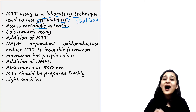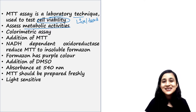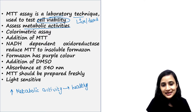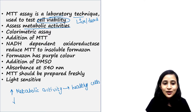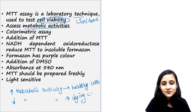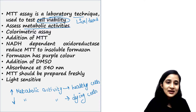If cells show a high amount of metabolic activity, it reflects that cells are healthy. So high metabolic activity means healthy cells, and low metabolic activity means cells are dying. MTT is a colorimetric assay, meaning it checks the concentration of a colored compound.